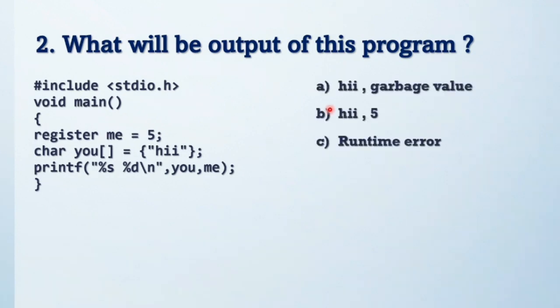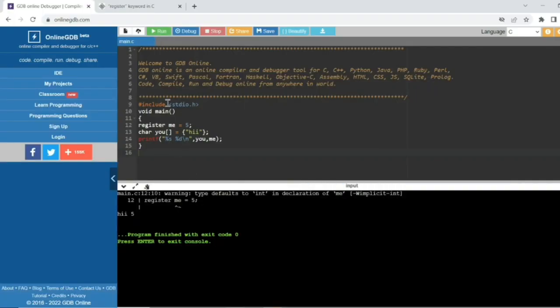Next question, friends. See the code and try to solve first. These are the options. Let's see what is the output of this MCQ. See, output is hi phi with warning. Okay, so here register int me is our variable, it's assigned with five value. Here character u is our variable, but it is a character array type. Okay, so it is a string we can say also.